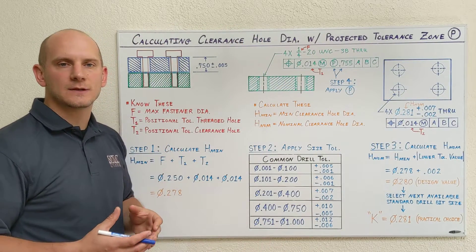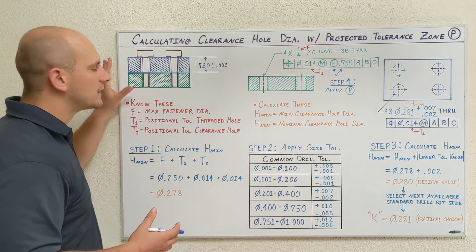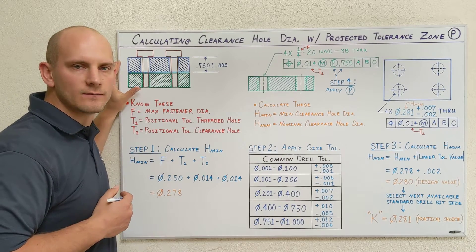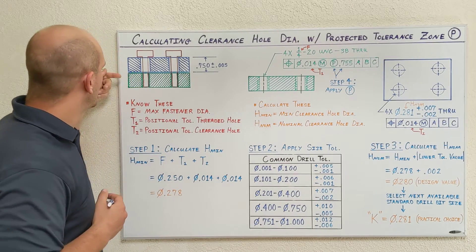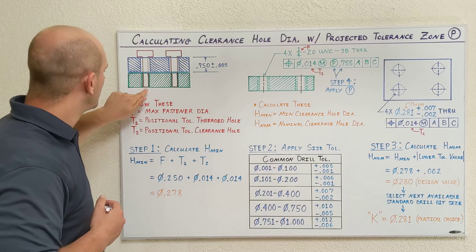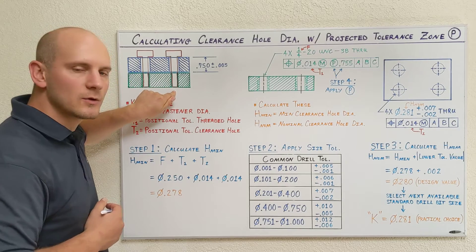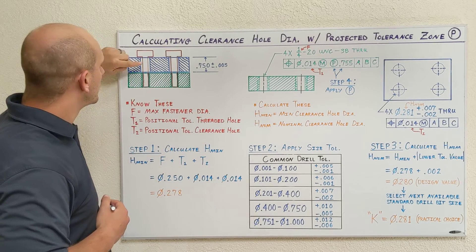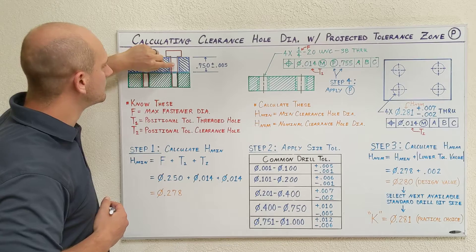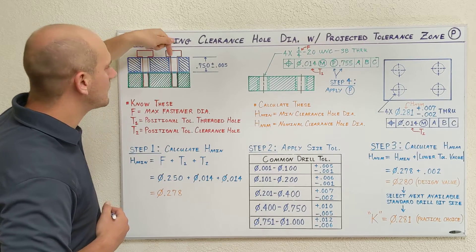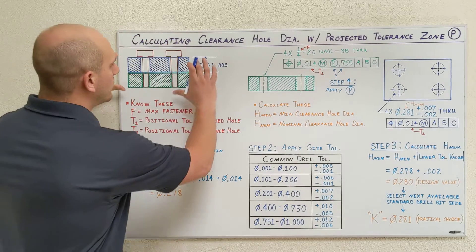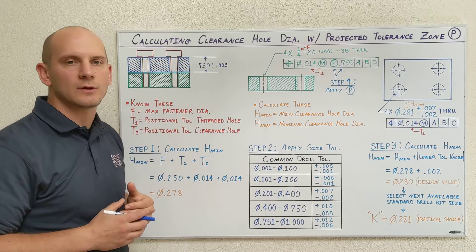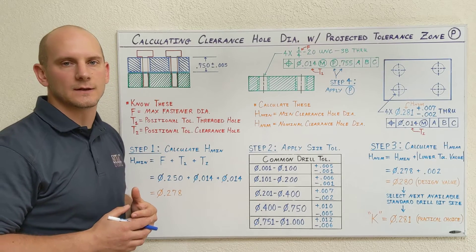To convey the concepts today, I'm going to use an assembly which I'm showing here in this front section view. Here I have a lower plate with quarter-20 tapped holes, an upper plate with clearance holes, and then my fasteners coming through bolting these two plates together. This is a pretty common mechanical design scenario.